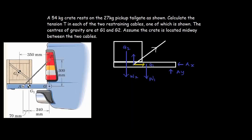In this lesson, we are going to solve this question I have here on the screen. The question says that the 54 kg crate rests on the 27 kg tailgate as shown. Calculate the tension T in each of the two restraining cables, one of which is shown. The centers of gravity are at G1 and G2. Assume the crate is located midway between the two cables. So what I have to do is calculate the tension T in this cable that is holding the tailgate together.